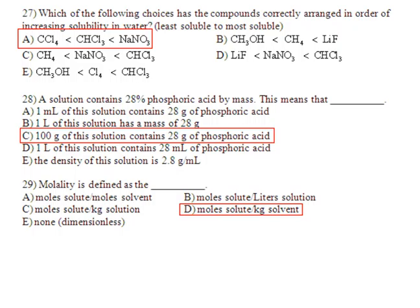27, again, just kind of rank these from least soluble. So that would be something that's non-polar in water, non-polar, and therefore non-soluble in water, to extremely soluble. And sodium nitrate is an ionic compound that is extremely soluble in water.